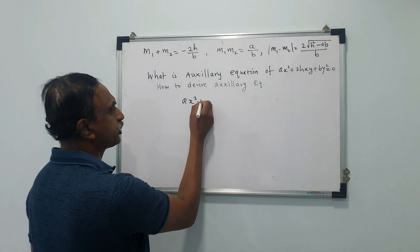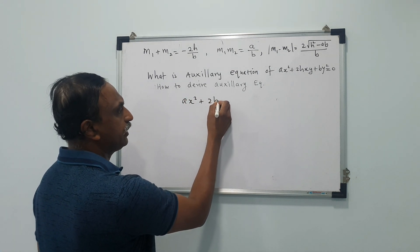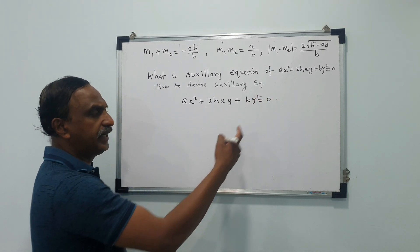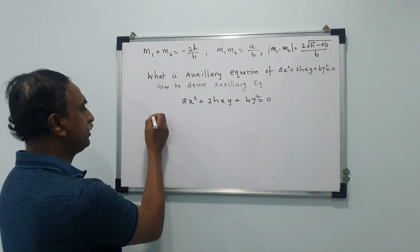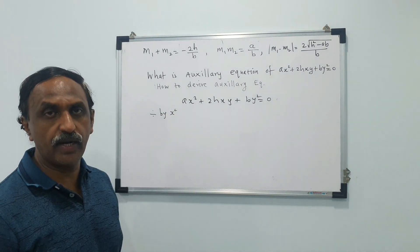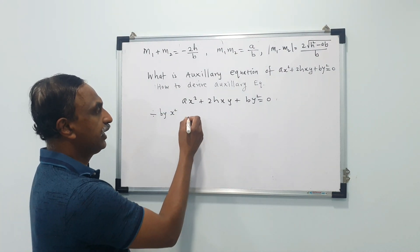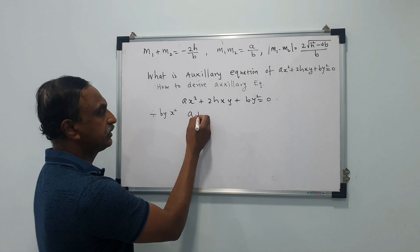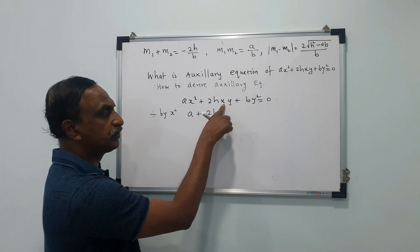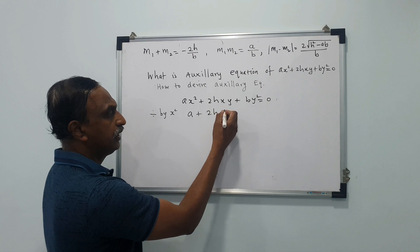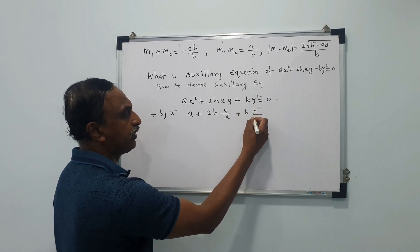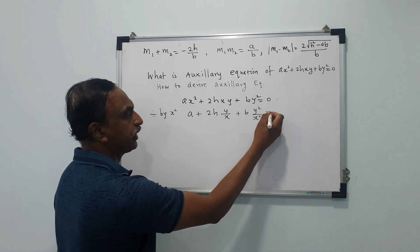Consider ax² + 2hxy + by² = 0. I am dividing this equation by x². When you divide by x², you get a + 2h(y/x) + b(y/x)² = 0.